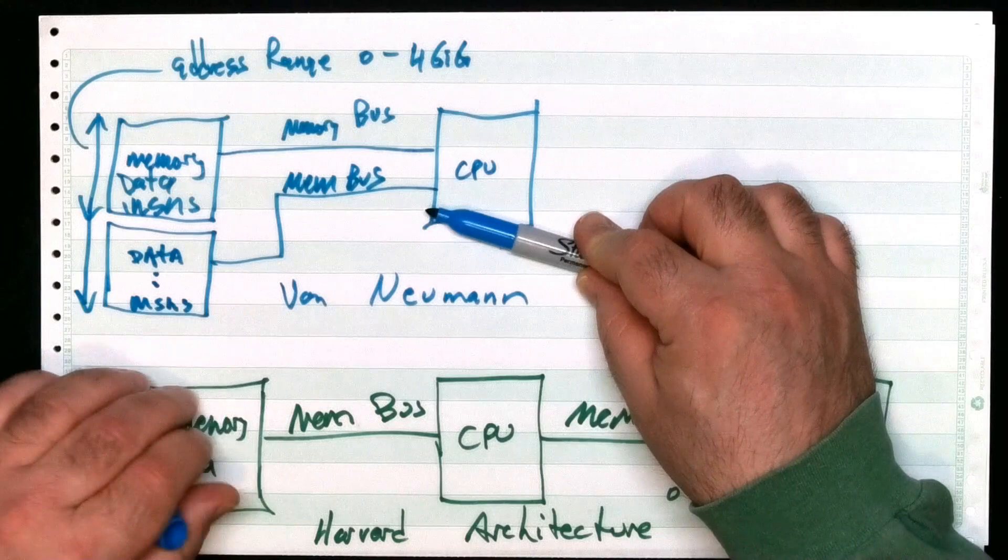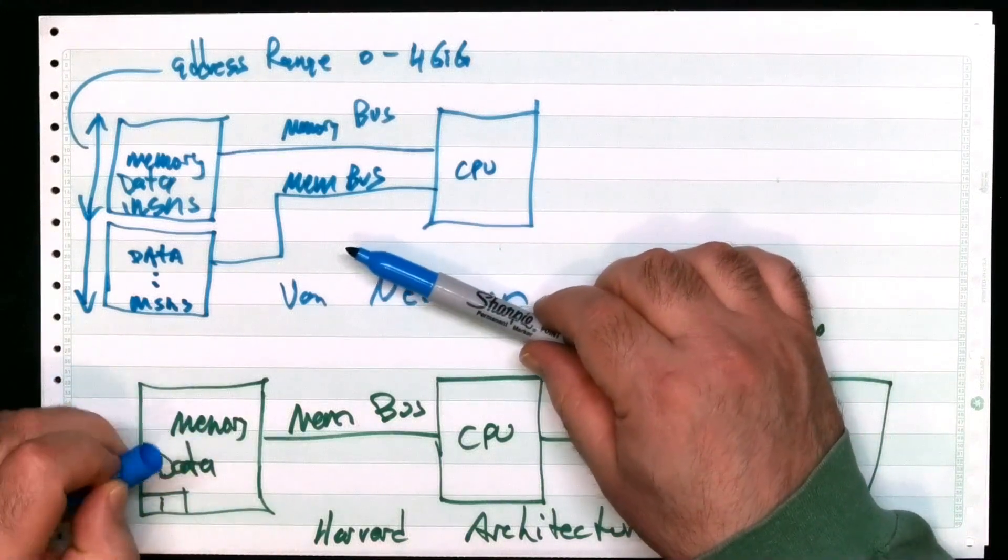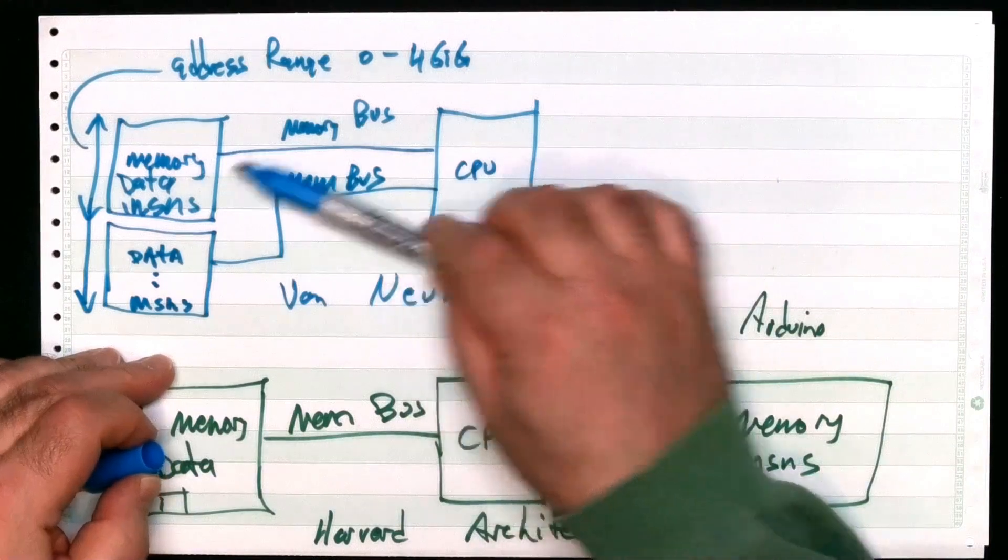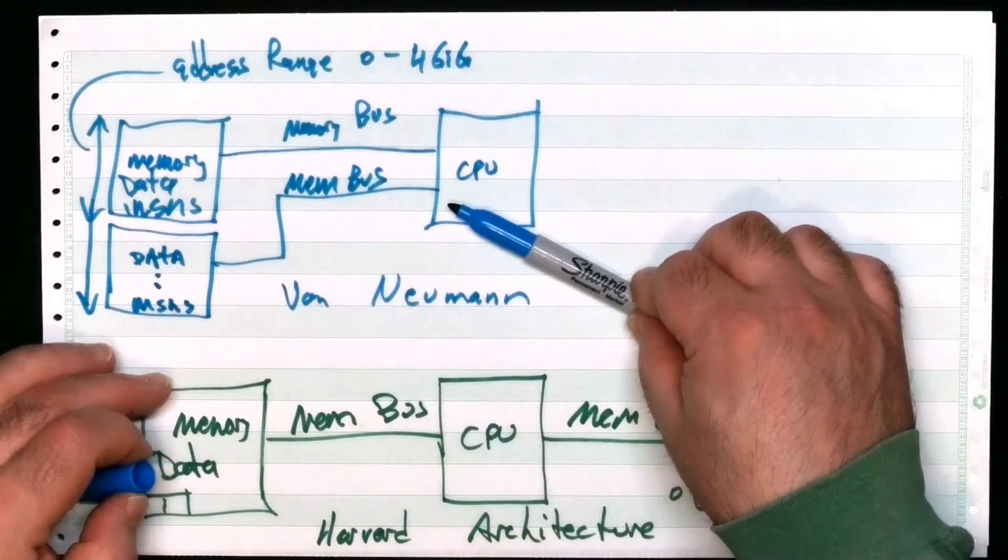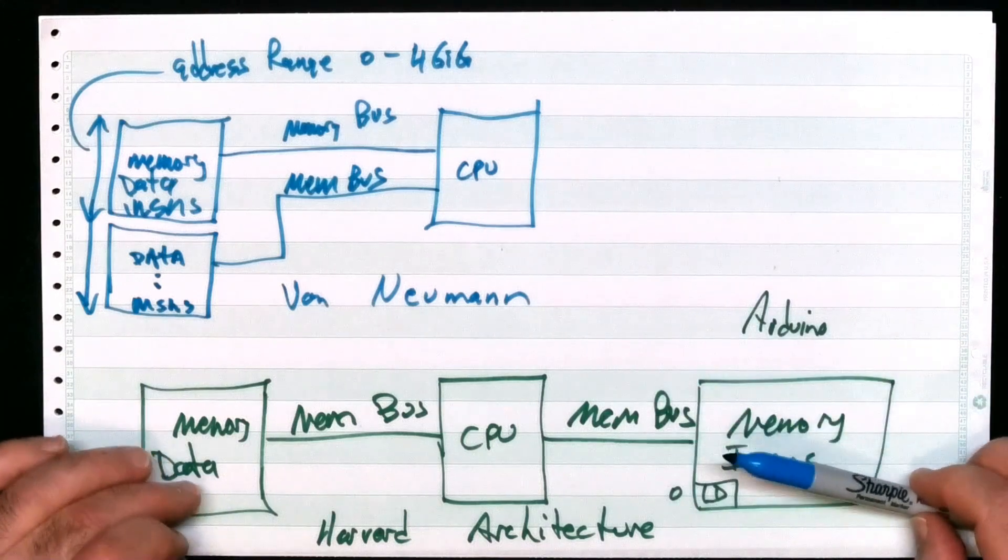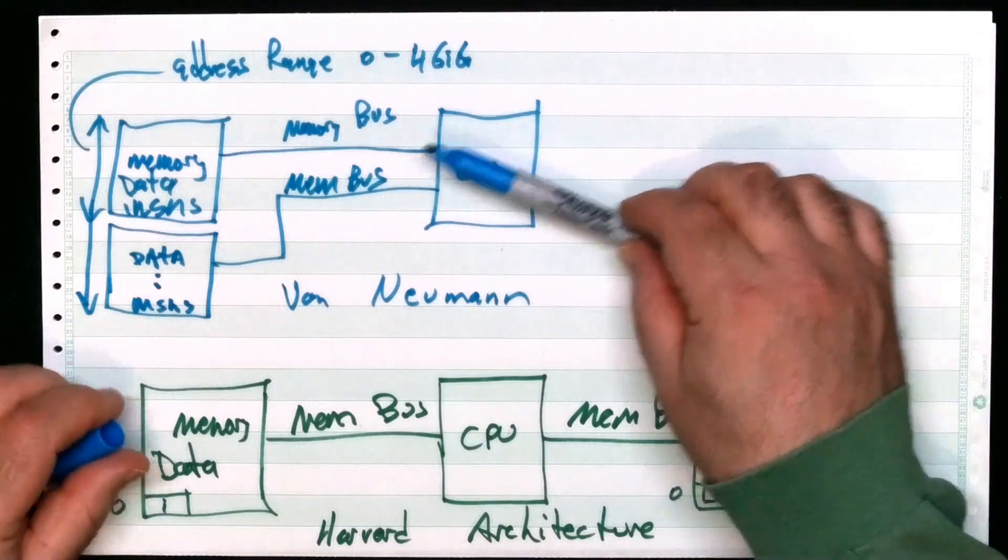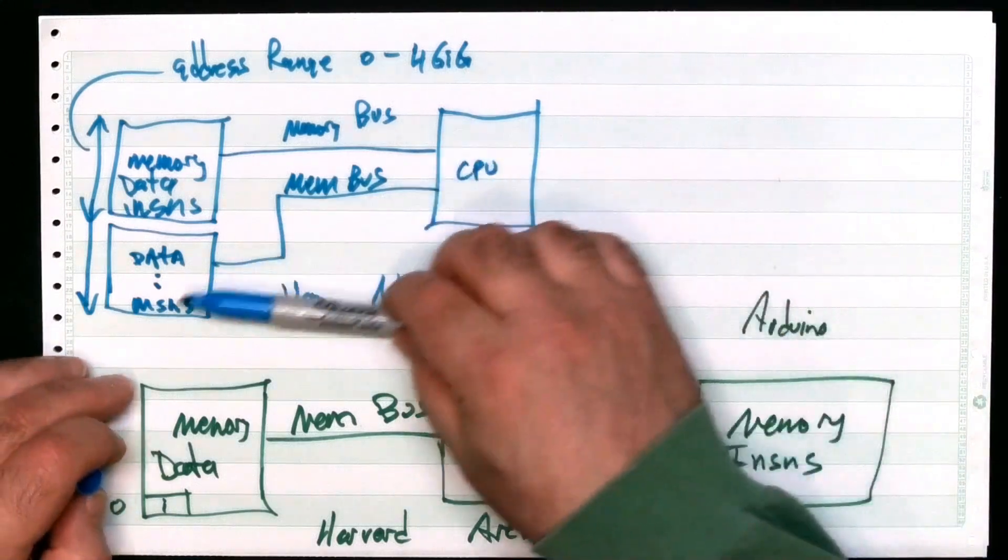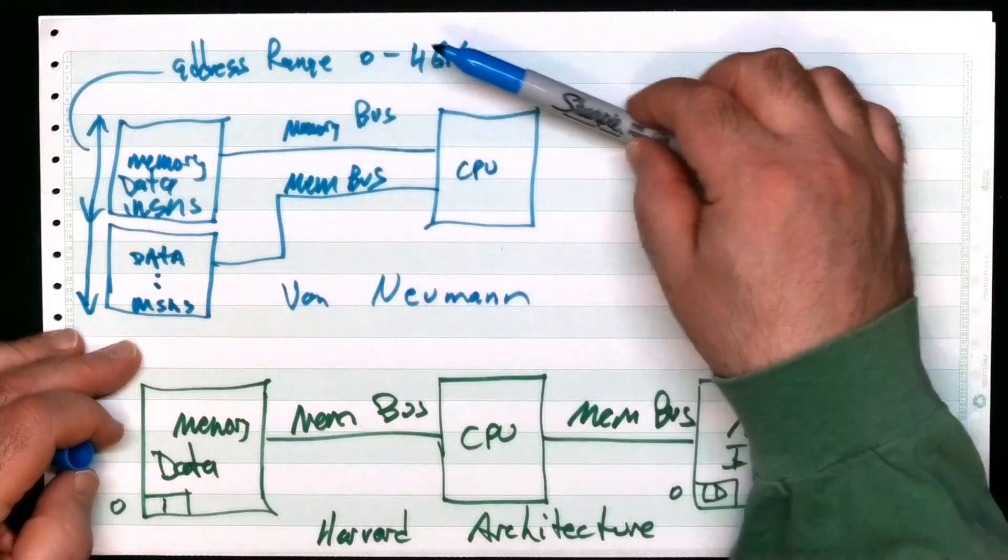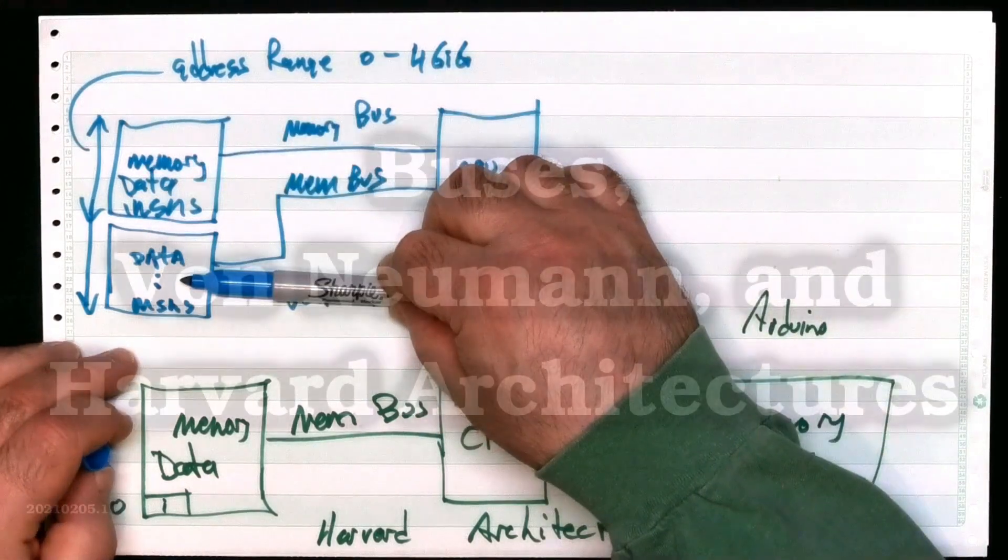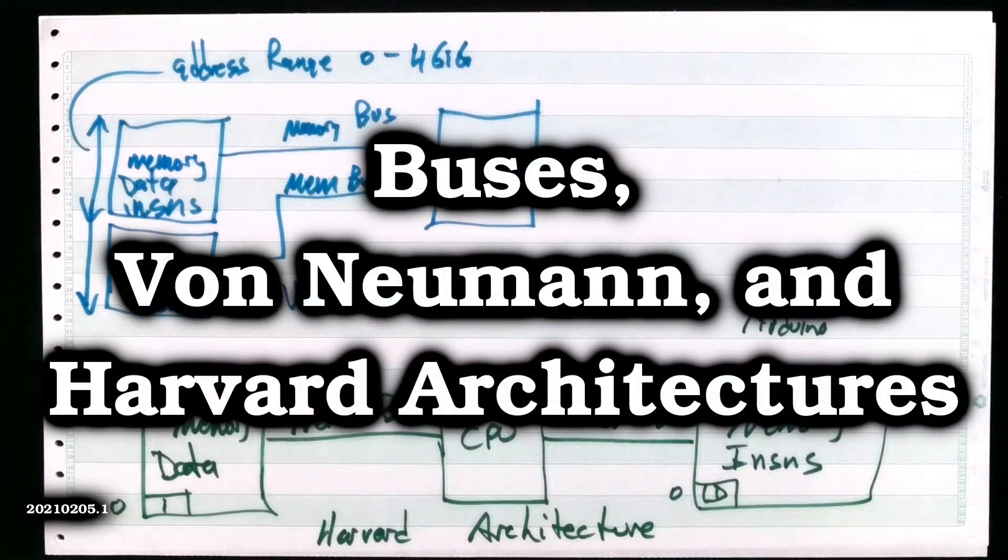And you do see this in certain PCs. You'll see multiple banks of memory, and they'll be separately connected to the CPU for double speed and things like that, in order to gain the same kind of arguments you get in the Harvard, while at the same time retaining the value of just having one single giant address space and the simplicity of how that manifests itself when you're writing your code. Thanks for watching. See you next time.